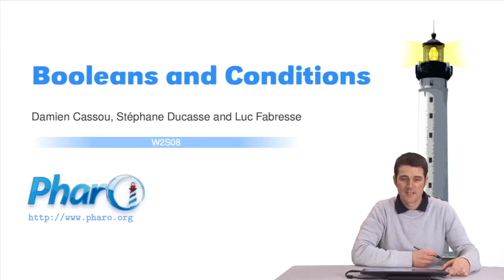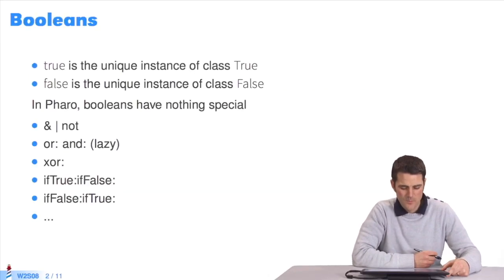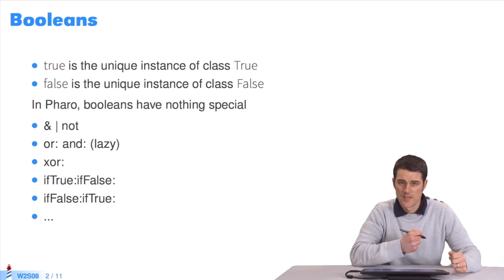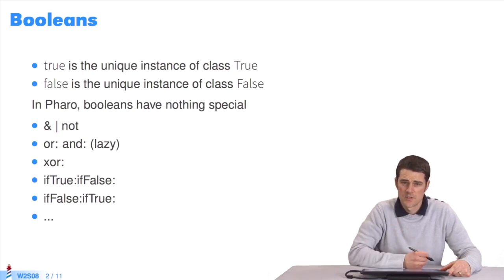In this course, we'll study Booleans and conditions in Pharo. There are two Boolean objects: true and false. True is the only instance of the class True. False is the only instance of the class False. We'll send messages to these objects to set Boolean operations or alternative structures, such as ifTrue, ifFalse, etc.